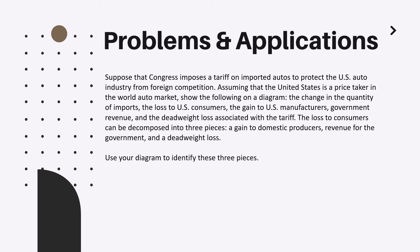Next question. Suppose that Congress imposes a tariff on imported autos to protect the US auto industry from foreign competition. Assuming that the United States is a price taker in the world auto market, show the following on diagram: the change in the quantity of imports, the loss to US consumers, the gain to US manufacturers, government revenue, and the deadweight loss associated with the tariff. The loss to consumers can be decomposed into three pieces: a gain to domestic producers, revenue for the government, and the deadweight loss. Use your diagram to identify these three pieces.